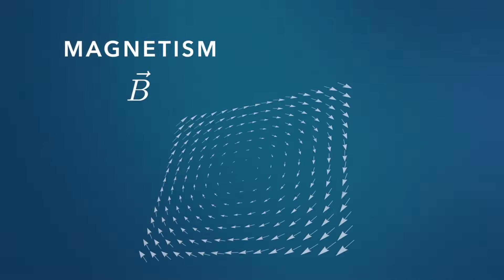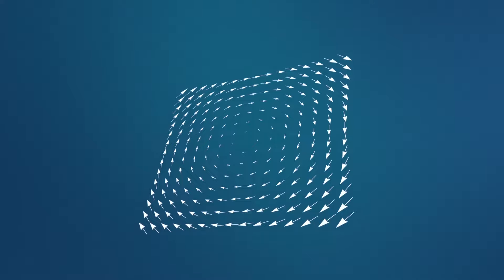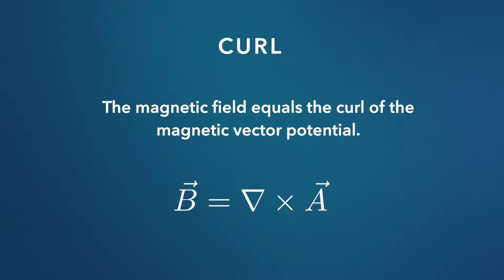Magnetism comes from circulation in the magnetic vector potential. So when the magnetic vector potential circulates like a vortex or a helix, you get a magnetic line of force along the axis of that circulation. It's kind of analogous to wind in a tornado swirling around the tornado's vertical axis. We call that circulation curl, and in math and physics we say that the magnetic field equals the curl of the magnetic vector potential.